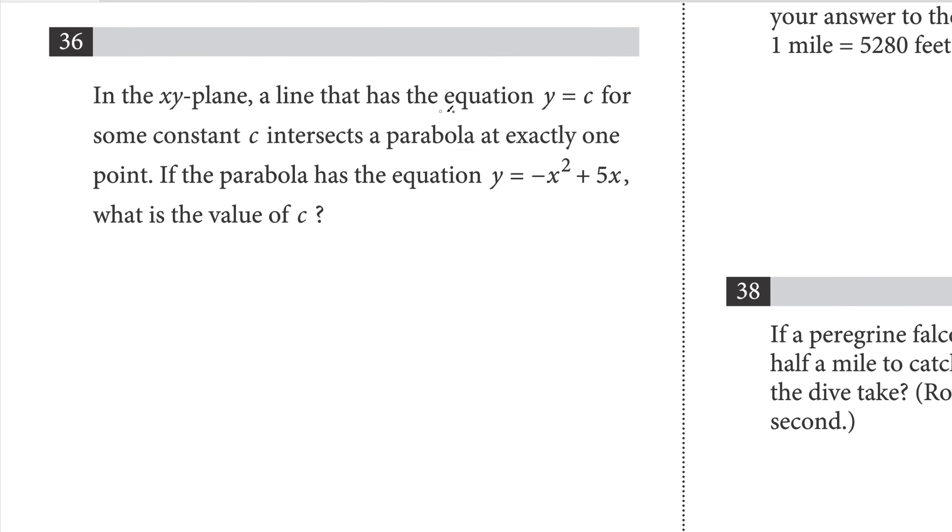In the xy plane, a line that has the equation y equals c for some constant c intersects the parabola at exactly one point. If the parabola has the equation y equals negative x squared plus 5x, then what is the value of c? Remember that a parabola is symmetrical in shape, and since we have a negative sign, it's going to be a downward facing parabola. So let me just draw that now. If I factor out an x, a negative x, and then we have x minus 5.